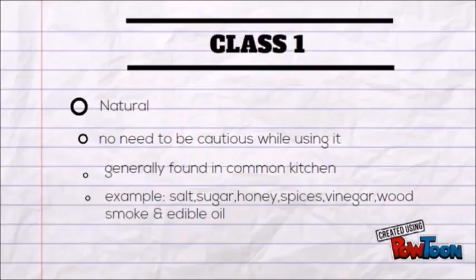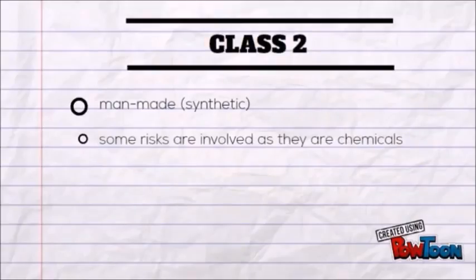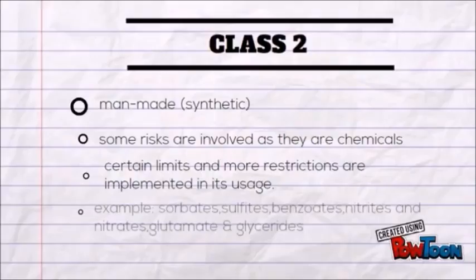Meanwhile, Class 2 preservatives are man-made — in other words, synthetic. There are some risks involved as these involve chemicals. In the usage of this preservative, certain limits and more restrictions are implemented. Examples of Class 2 preservatives are sorbates, sulfites, benzoate, nitrites, nitrates, and glutamate.